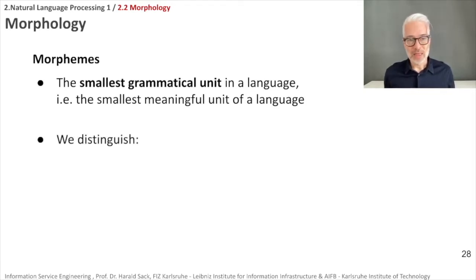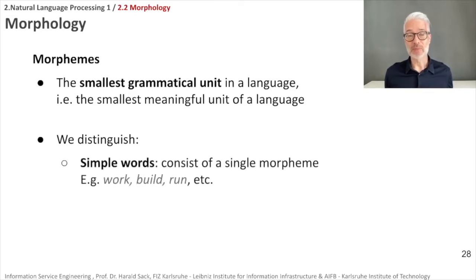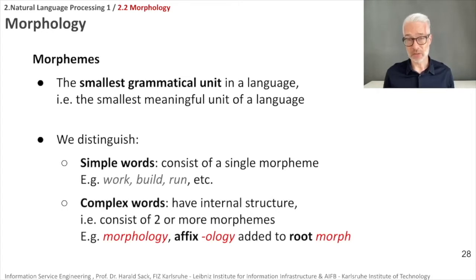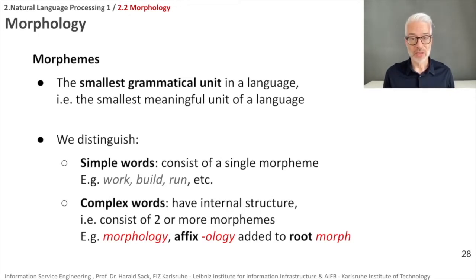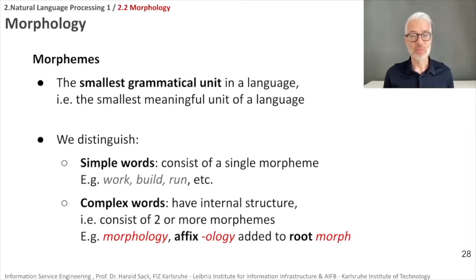Among morphemes, we distinguish two different types. There are simple words — words that consist of only a single morpheme, like 'work,' 'run,' or 'build.' And there are complex words, which have an internal structure — they consist of two or more morphemes. For example, the word 'morphology' consists of a root 'morph' and an affix 'ology.'